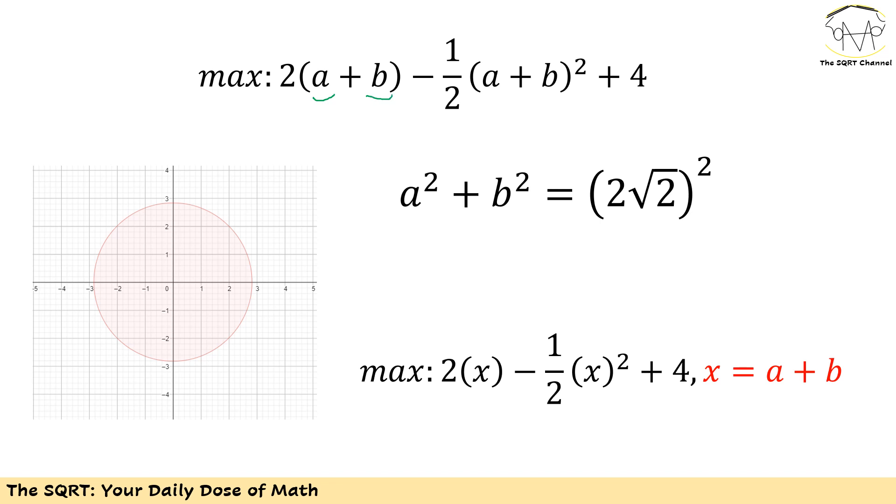To connect it to the original problem, remember a squared plus b squared was 8. So we know that a and b are going to be on a circle with center at the origin and radius equals 2 radical 2. Because of that, I'm going to find the maximum possible value of this expression under one condition: a and b are going to be on the circle that you are seeing here.